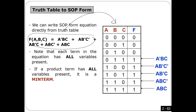A very important thing: why sometimes I may have the truth table and I want to get the equation. Is it always the opposite — I have the equation and then I get the truth table? No. Most of the time, as you will see later in this course, you have the truth table and you want to get the equation, because this is how we will make a design, how we are going to design a circuit.